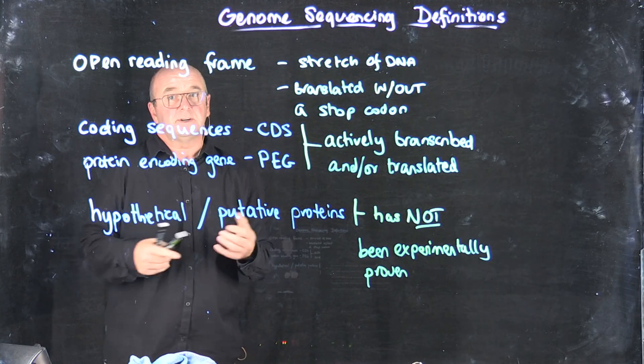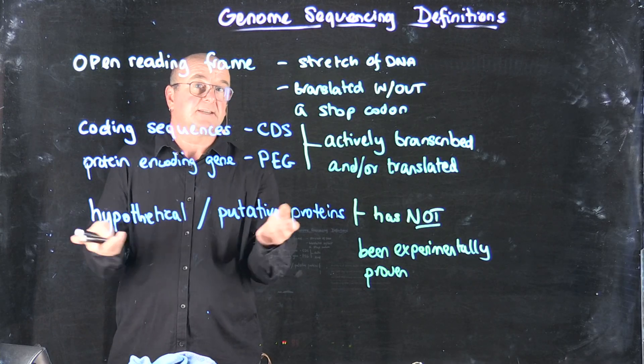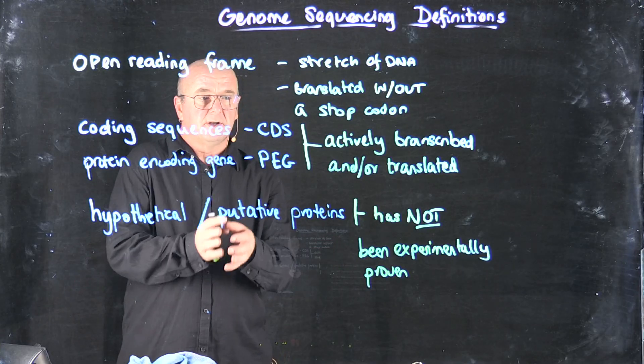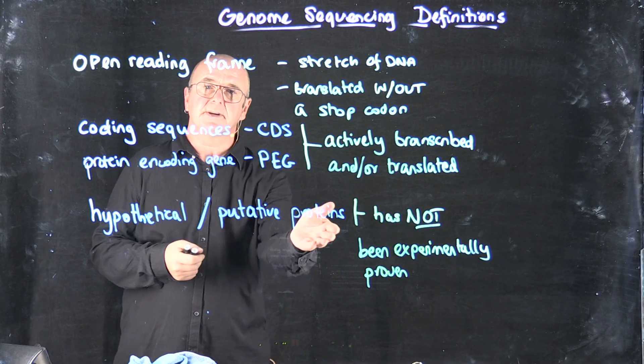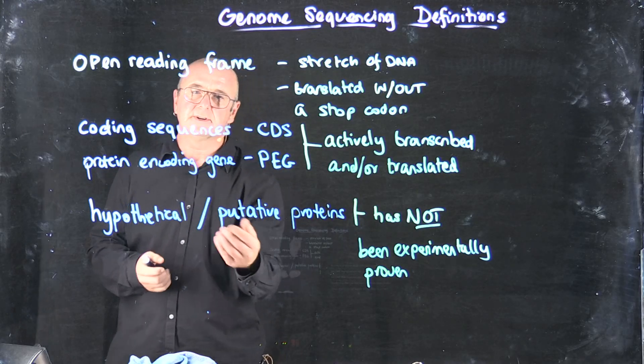So if we have a hypothetical function, it may be a hypothetical unknown function, so we think it exists, but we don't know. Or it may be a hypothetical function where we actually think we know what the function is, but because we haven't experimentally proven it, we've still decided to give it the word putative or hypothetical.